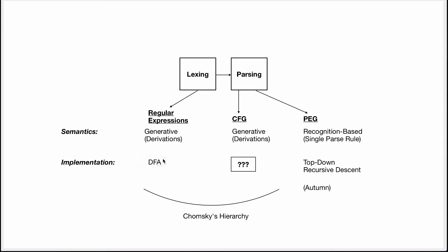That was a few videos ago. On the parsing side, besides CFG, we've also talked about PEG — parsing expression grammars. We've seen that PEG are recognition-based. Notably, we emphasized the difference from CFG caused by the single parse rule: when you have a choice in PEG, there's only one correct answer based on the input. We've also seen how PEG can be implemented as top-down recursive descent parsers, and we've implemented some of these parsers by hand.